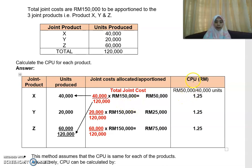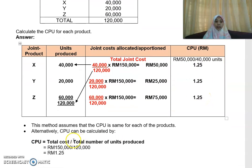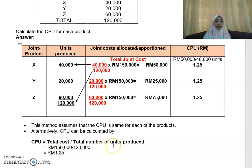If you want to calculate the cost per unit (CPU), for X that is RM50,000 divided by 40,000 units, giving RM1.25. This method assumes that the CPU is the same for each product — you can verify: 25,000 divided by 20,000 and 75,000 divided by 60,000 both give RM1.25. Alternatively, you can calculate CPU as total cost divided by total units: RM150,000 divided by 120,000 also gives RM1.25.